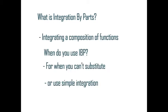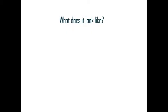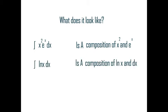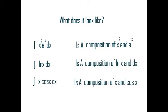When do you use IBP? For when you can't substitute or use simple integration. What does it look like? The integral of x squared times e to the x is a composition of x squared and e to the x. The integral of natural log x dx is a composition of natural log x and dx. The integral of x cosine x is a composition of x and cosine x.